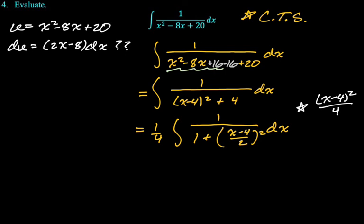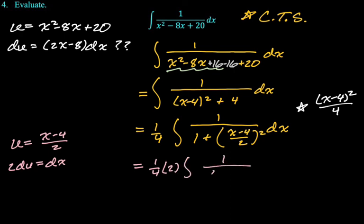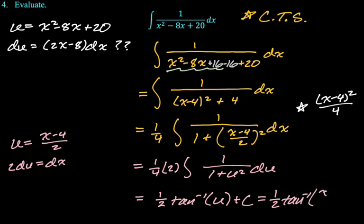All right, let's do a quick u substitution on this. We'll make u equal x minus 4 over 2, as I just said, which means that 2 du is equal to dx. We'll do all of our substitutions. So we get 1 fourth, you get a 2 from the 2 du being equal to dx. And then we get 1 over 1 plus u squared du. That's definitely arctan, so this will be 1 half arctan of u plus c. And then we know that u is actually x minus 4 over 2. So our final answer here is going to be 1 half arctan of quantity x minus 4 over 2, and then plus c. And there you go. That's the whole problem set. I hope this was helpful, and good luck.